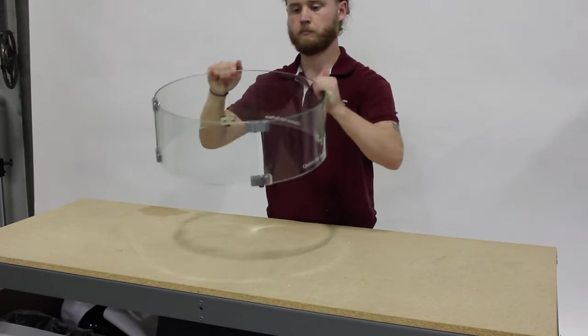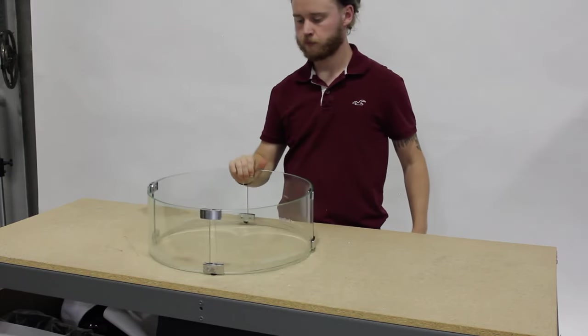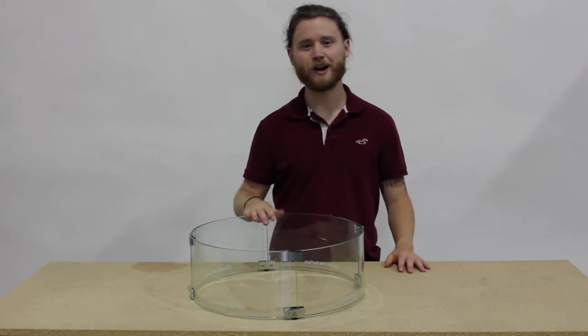Once all connections have been properly made, your flame guard will be sturdy and firmly held in position if you need to move it. And that's how to assemble your round flame guard.